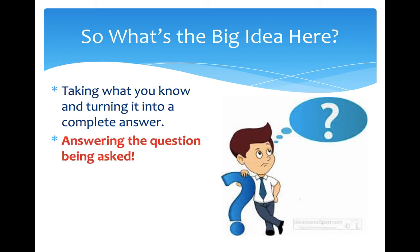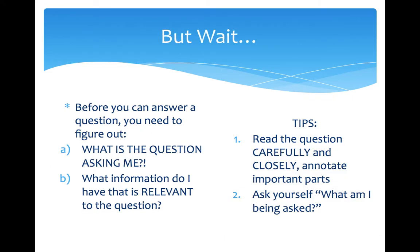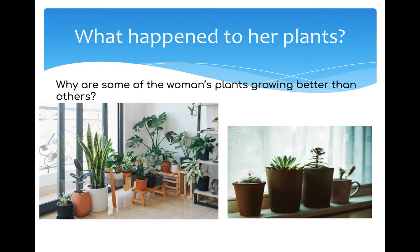Two problems that we often see middle schoolers running into: number one is answering the question being asked. Make sure that you're really paying attention to what the question is asking you and that that's what you're talking about in your conclusion. The second piece, which is also super important, is making sure that you're providing enough evidence and reasoning to support the claim that you made. Any claim in science doesn't mean anything unless it has evidence to support it, so we want to include enough of that to make our argument convincing. Step back and find out what am I being asked here, and what information, data, or observations is going to be relevant to help me support the claim that I make.